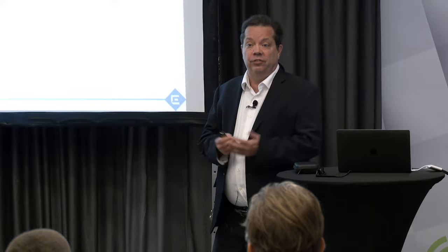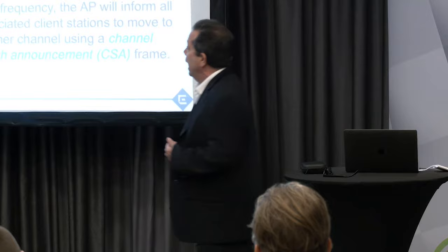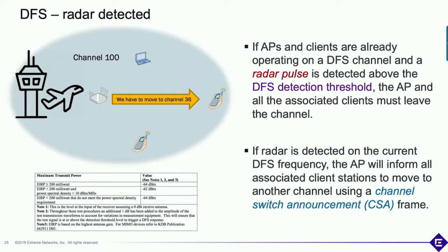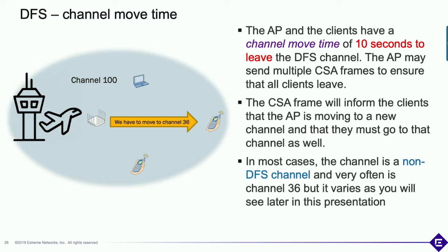Once the availability check is done — whether 10 minutes or 60 seconds — they can start transmitting. From that point on, they have to continue listening for radar pulses constantly. If they detect a radar pulse, the AP sends what's called a channel switch announcement frame telling clients to move. There's a defined window of 10 seconds for this to occur, but it usually happens in under a second — the AP is just saying 'guys, there's radar here, we gotta move to a different channel.'